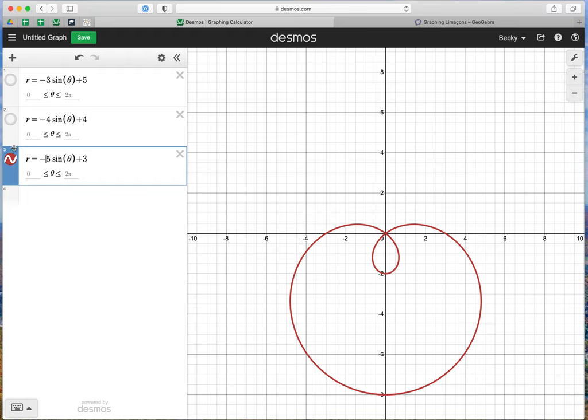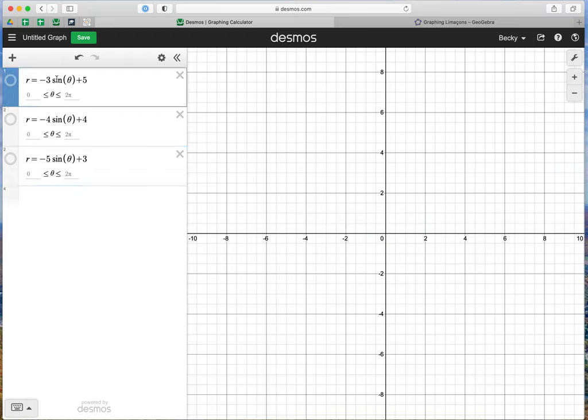Let's do the same thing for these cosine graphs. I'm going to go back, I'm going to make this 3 cosine theta plus 5, so this is our dimple Limasson. If I make it negative 3, it's going to flip, so the majority of it is in the negative x direction.